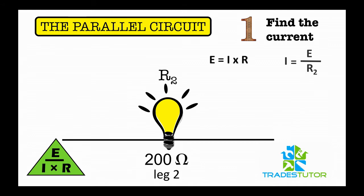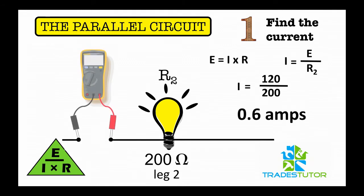We go through the same procedure, plug the numbers in, and we get 0.6 amps. Once again, the multimeter would read 0.6 amps.